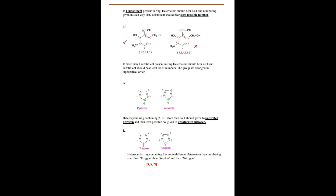For pyrazole and imidazole — heterocyclic rings containing two nitrogen atoms — number one is given to the saturated nitrogen, and the least possible number is given to the unsaturated nitrogen. For thiazole, which contains a sulfur atom, in a heterocyclic ring with two or more different heteroatoms, numbering starts from oxygen, then sulfur, then nitrogen.